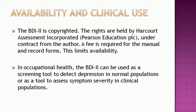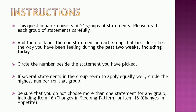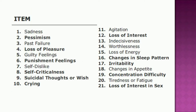In occupational health, the BDI-2 can be used as a screening tool to detect depression in normal populations or to assess symptom severity in clinical populations. Before administering the test, instructions must be given to the subject as follows: 'This questionnaire consists of 21 groups of statements. Please read each group of statements carefully, and then pick out the one statement in each group that best describes the way you have been feeling during the past two weeks, including today. Circle the number beside the statement you have picked. If several statements in the group seem to apply equally well, circle the highest number for that group. Be sure that you do not choose more than one statement for any group, including item 16 for changes in sleeping pattern or item 18 for changes in appetite.'